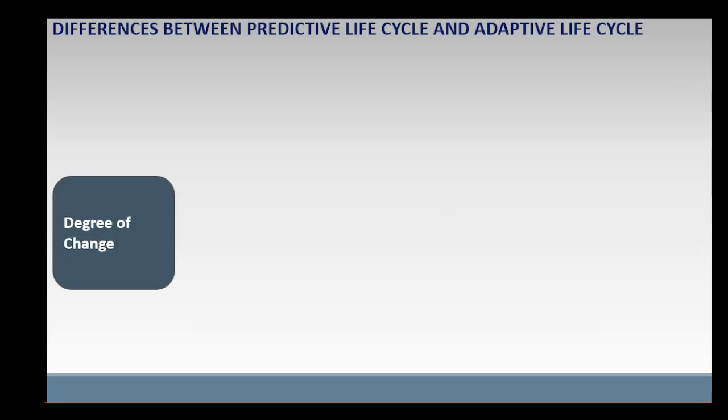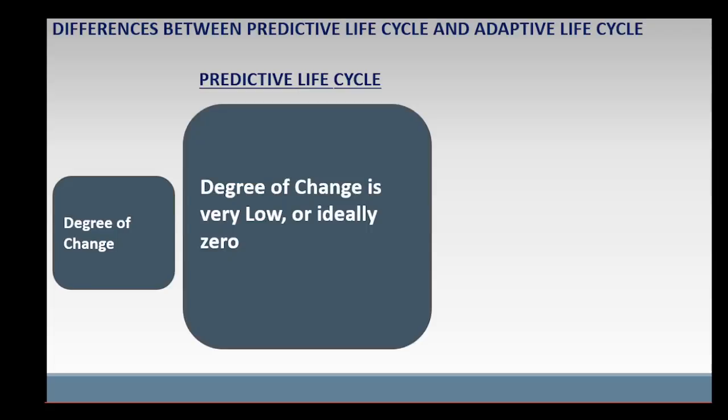In terms of degree of change, in predictive life cycle, the degree of change is very low or ideally zero. That is, during the project, very little or no change is expected to the approved project plan or the product being created.